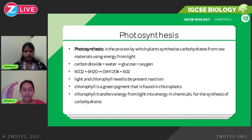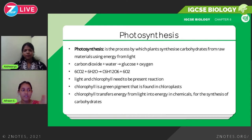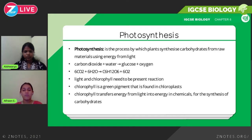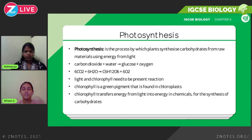There are a few requirements for the reaction to occur: light and chlorophyll. Light is required so that it can be converted to chemical energy for the reaction to take place. Chlorophyll is a green pigment — that's what gives the plant its signature green colour. Chlorophyll transfers energy from light into chemical energy for the synthesis of carbohydrates, converting light energy into chemical energy.